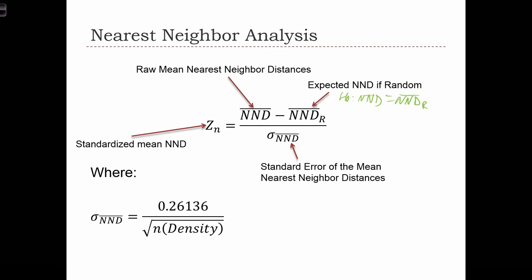Then we divide by the standard error of the average nearest neighbor distances. That's just a formula using sample size n and density. When we evaluate this expression, it gives us a standardized z-score.